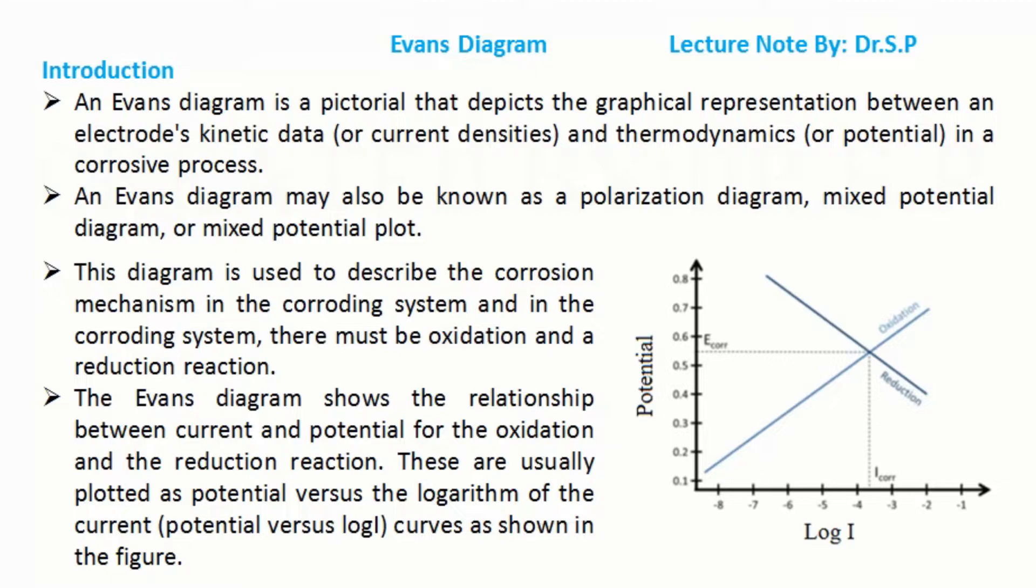An Evans diagram is a pictorial that depicts the graphical representation between an electrode's kinetic data (or current densities) and thermodynamics (or potential) in a corrosive process. An Evans diagram may also be known as a polarization diagram, mixed potential diagram, or mixed potential plot.